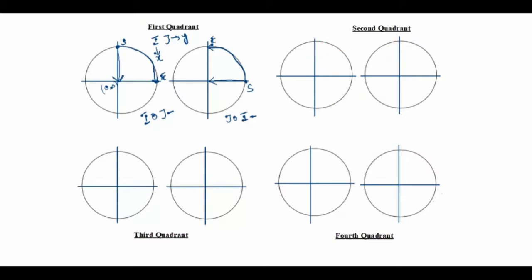Now we'll see the second quadrant. This is the second quadrant — same way, this is 0,0. The start point is here and the end point is here. The arrow comes down toward the X-axis, and the end point is on the X-axis, so I is 0. The Y-axis arrow comes down, so J is minus.